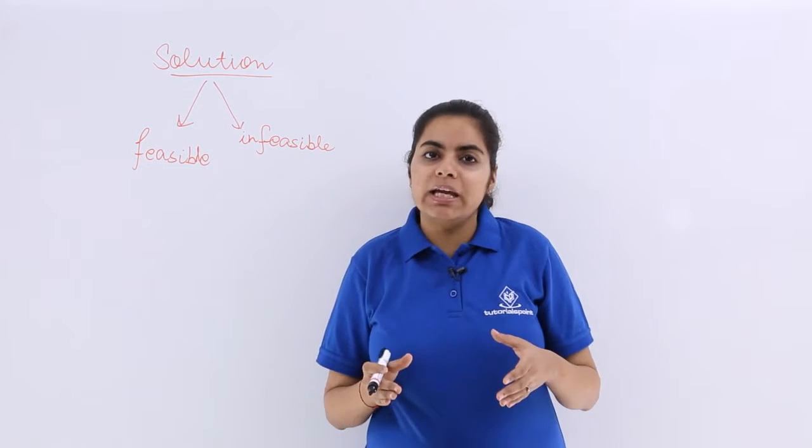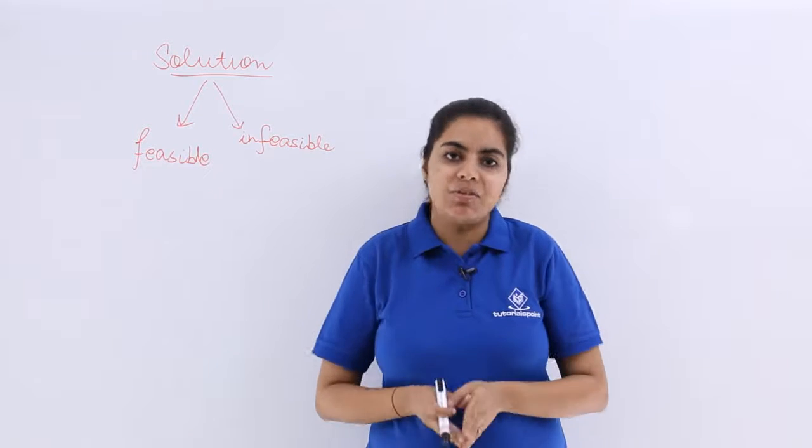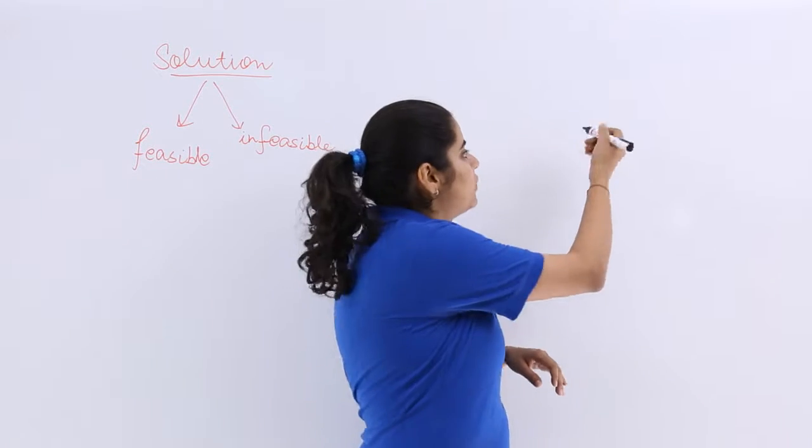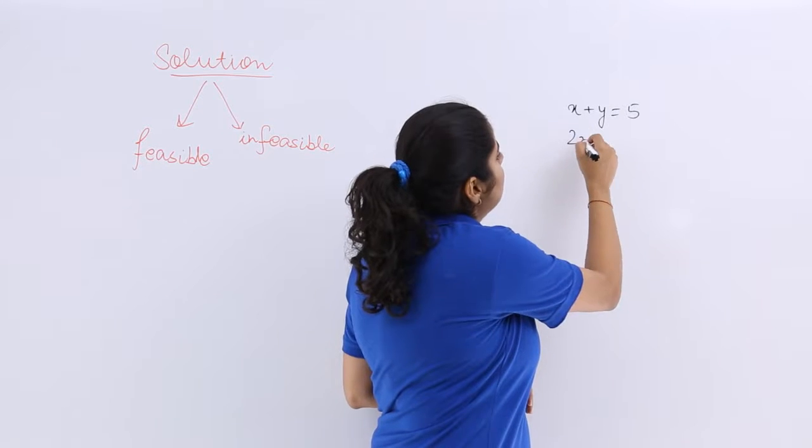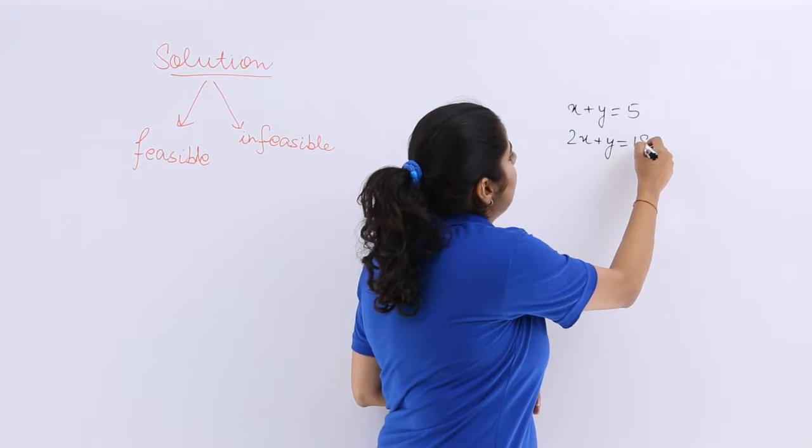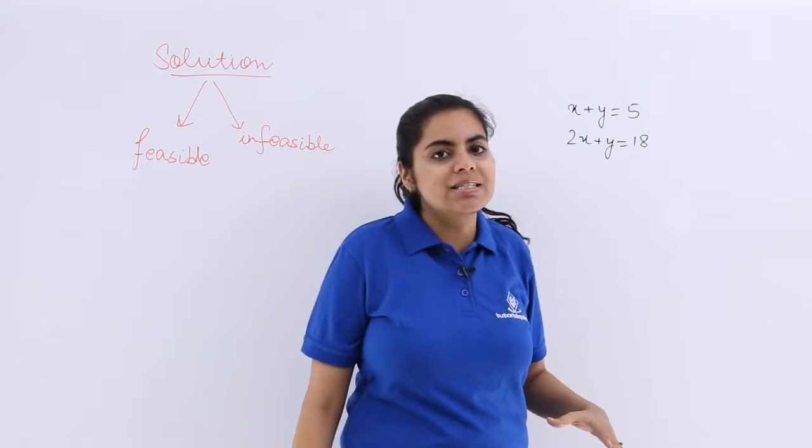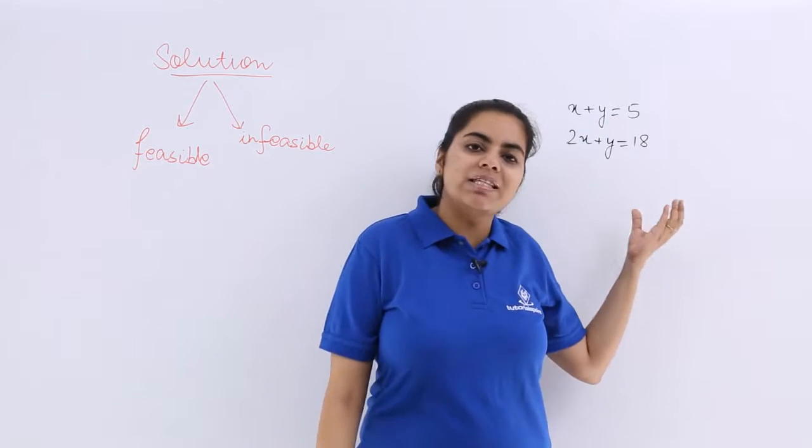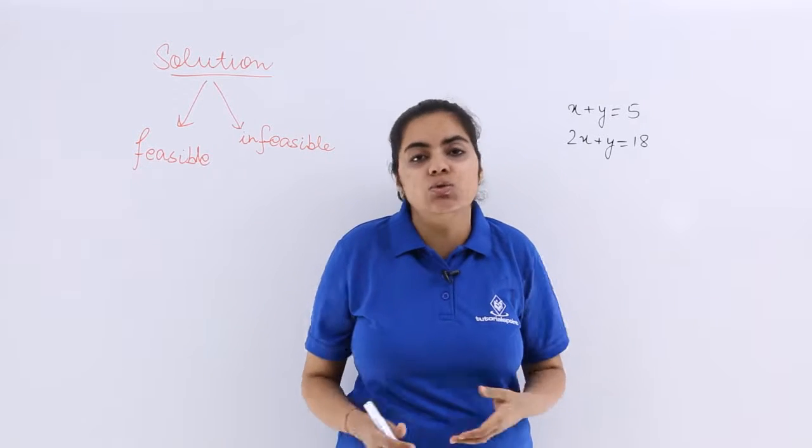A solution for an equation would be what satisfies the equation. Suppose I have the equation like x plus y is equal to 5 and 2x plus y is equal to 18. So what would be the solution that will be obtained on solving this equation? The value of x and y which satisfy simultaneously this equation would be named as the solution or the root.